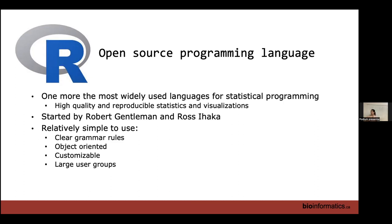R is generally beginner-friendly — it has very clear grammar rules and is more human-readable than some other languages. It's object-oriented, meaning we store values into virtual objects that we can then transform or recall. It's also customizable and open source, so when a function does an action, you can look behind the hood and see how the computation is done — unlike MATLAB, which is proprietary. With R, everything is transparent, and you can customize steps for your own use.